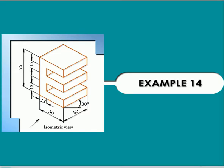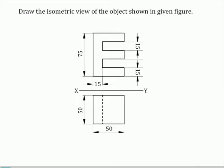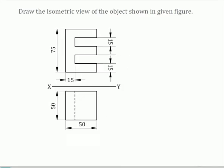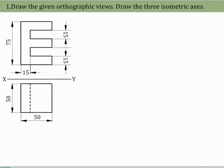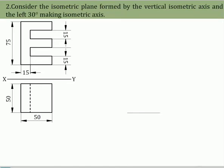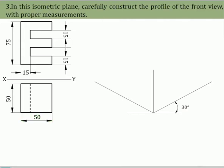Example problem: Draw the given orthographic views of the solid. Draw the three isometric axes. Consider the isometric plane formed by the vertical isometric axis and the left 30-degree making isometric axis. In this isometric plane, carefully construct the profile of the front view with proper measurements.